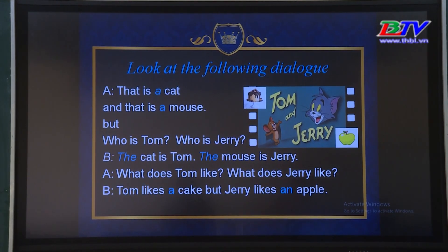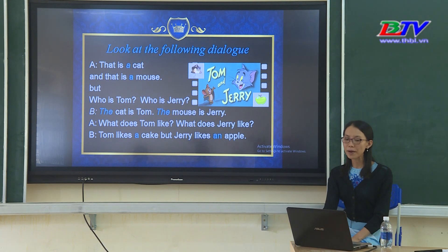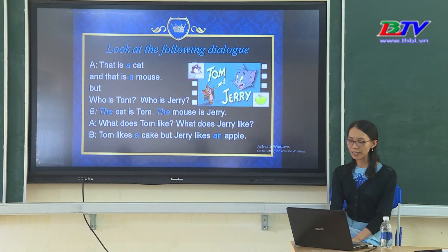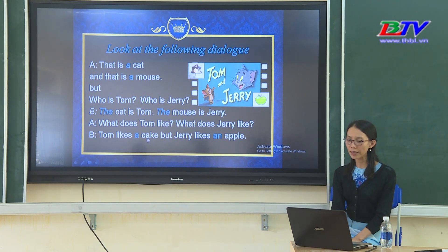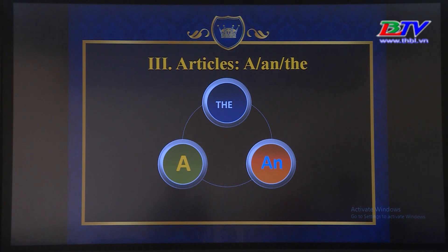Look at the following dialogue. A: 'That is a cat and that is a mouse. But who is Tom? Who is Jerry?' B: 'The cat is Tom. The mouse is Jerry.' A: 'What does Tom like? What does Jerry like?' B: 'Tom likes a cake but Jerry likes an apple.' Nhìn vào bức tranh trên, Tom thích một cái bánh và Jerry thích một quả táo. Vậy các em có thể đoán nội dung chúng ta sắp học là gì? Articles: a, an, the — chúng ta học về các mạo từ a, an hoặc the.